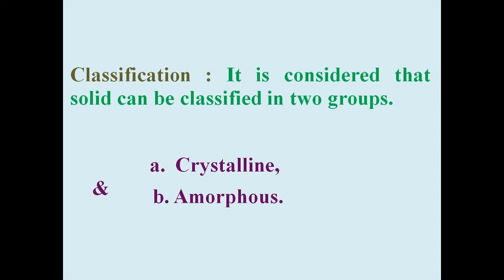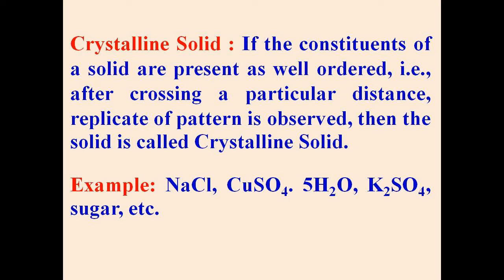Solids are classified into two main classes: A) crystalline solids and B) amorphous or powdery solids. If the constituents of a solid are present as well-ordered — that is, after crossing a particular distance, a replication of pattern is observed — then the solid is called a crystalline solid. For example: sodium chloride, copper sulfate pentahydrate, potassium sulfate, sugar, oils, alpha-sulfur, etc.